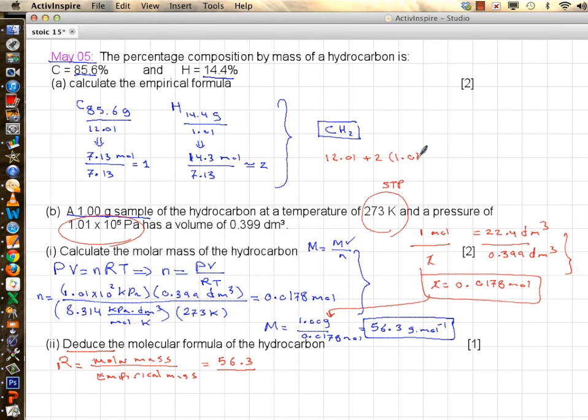So this will give you 14.03 grams per mole. That's empirical mass or mass of empirical formula. So divide it by this and you will get four times bigger. So your molecular formula is four times as big, and it's C₄H₈.